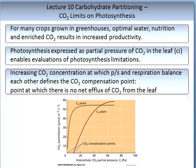For many crops grown in controlled environments such as glasshouses or greenhouses, optimal water, nutrition, and enriched CO2 can result in increased productivity. Photosynthesis can be expressed as the partial pressure of CO2 in the leaf, referred to as CI, enabling evaluation of photosynthetic limitations. Increasing CO2 concentration to the point at which photosynthesis and respiration balance each other defines the CO2 compensation point — that is, the point at which there is no net flux of CO2 from the leaf.